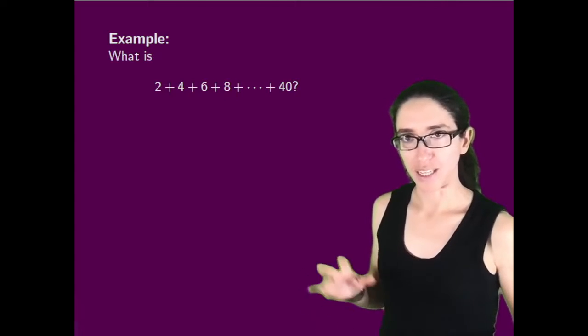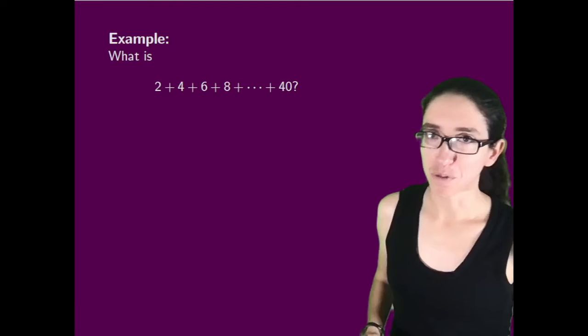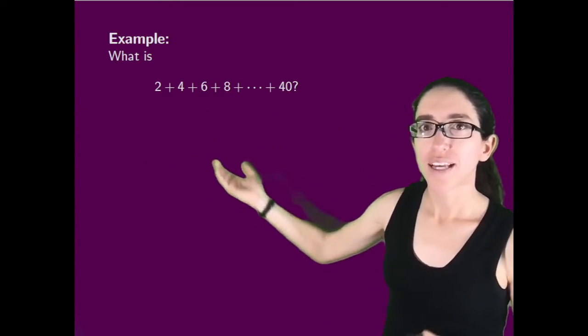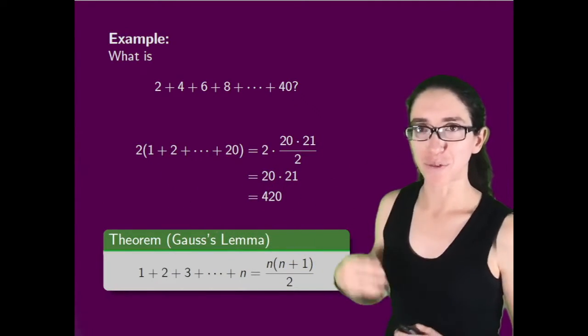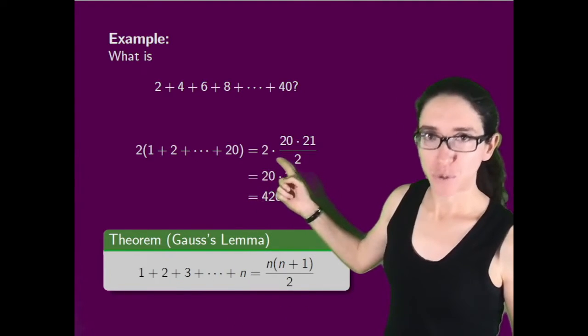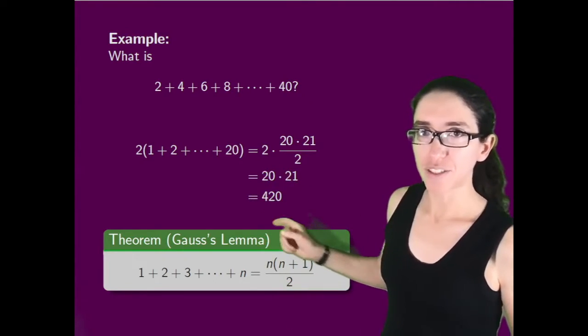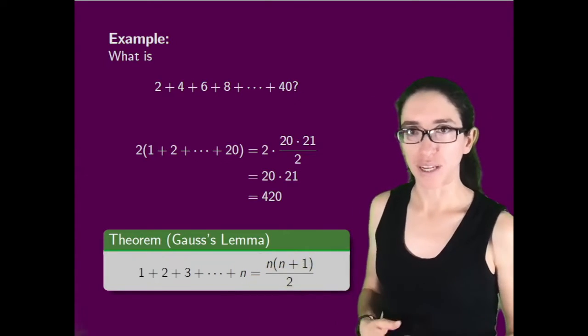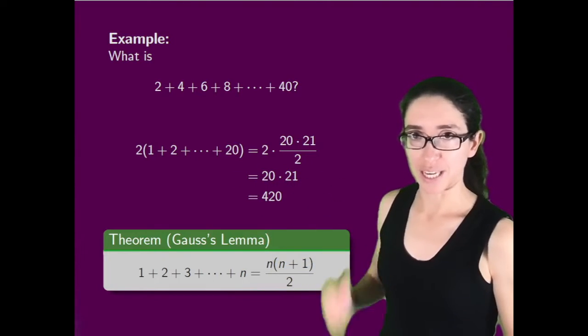Here's an example of where Gauss's formula can come up in other summations. Say we want to add the even numbers from two up to forty. We can factor out the two, and then we get two times the sum of the numbers from one up to twenty. Applying Gauss's formula, it's two times twenty times twenty-one over two. The twos cancel, so that's just twenty times twenty-one, which is four hundred and twenty. Very fast way of computing the sum.